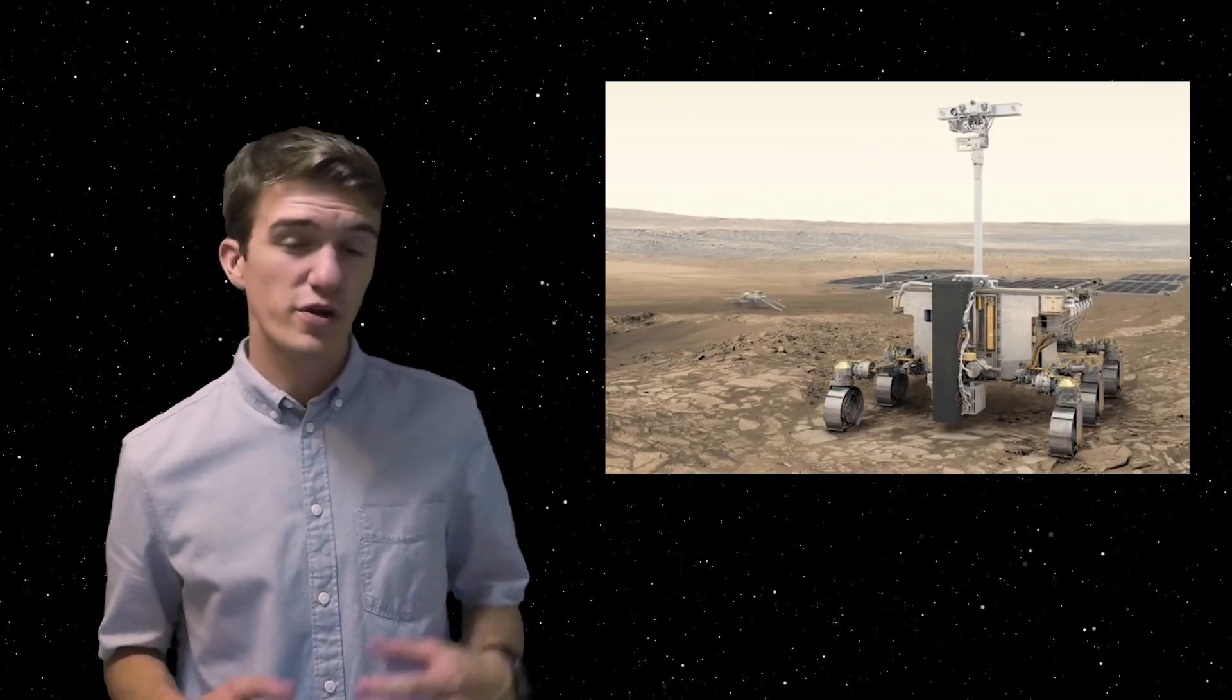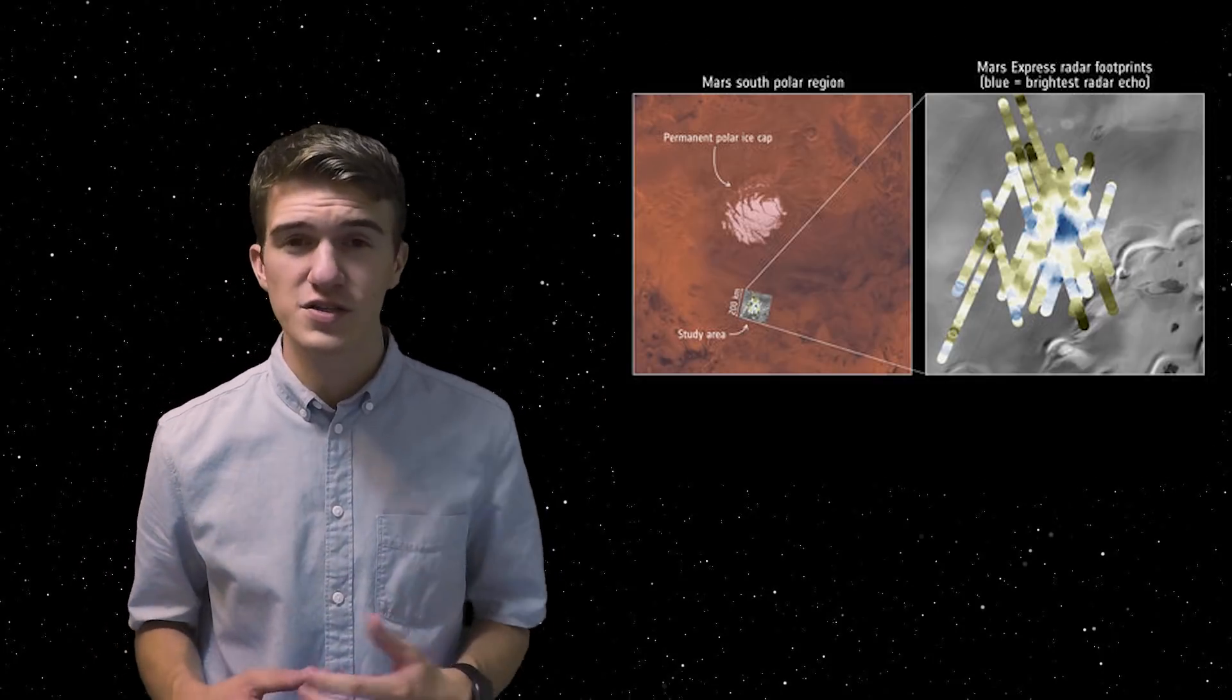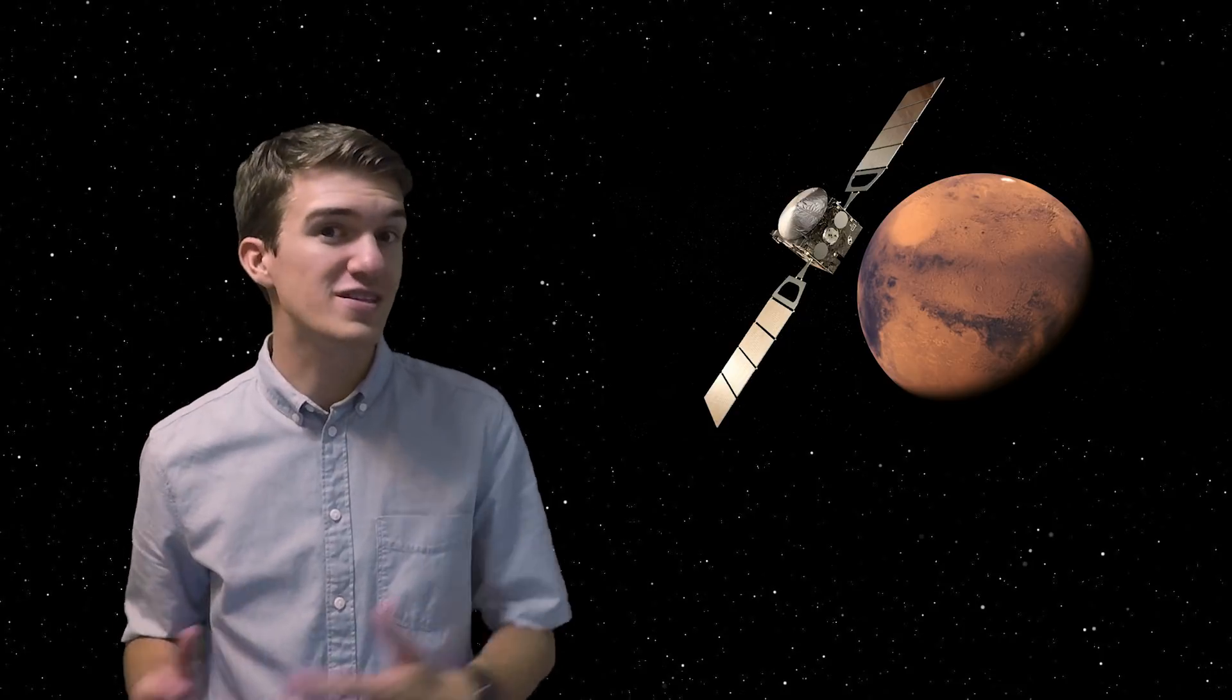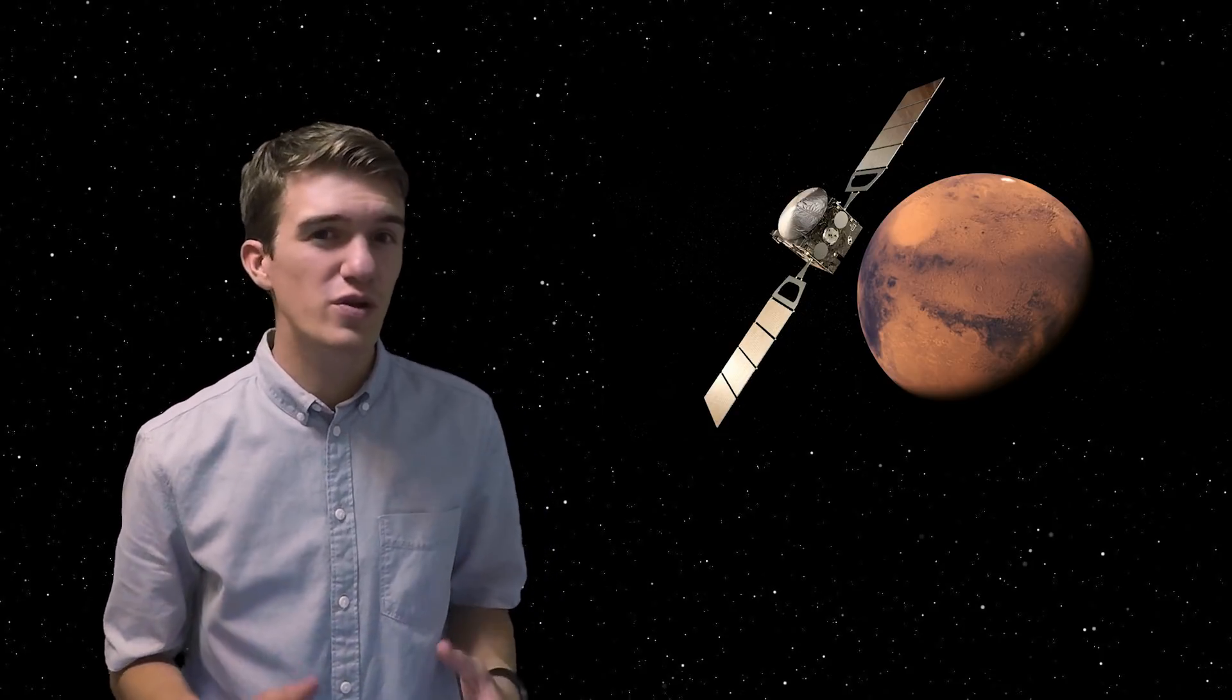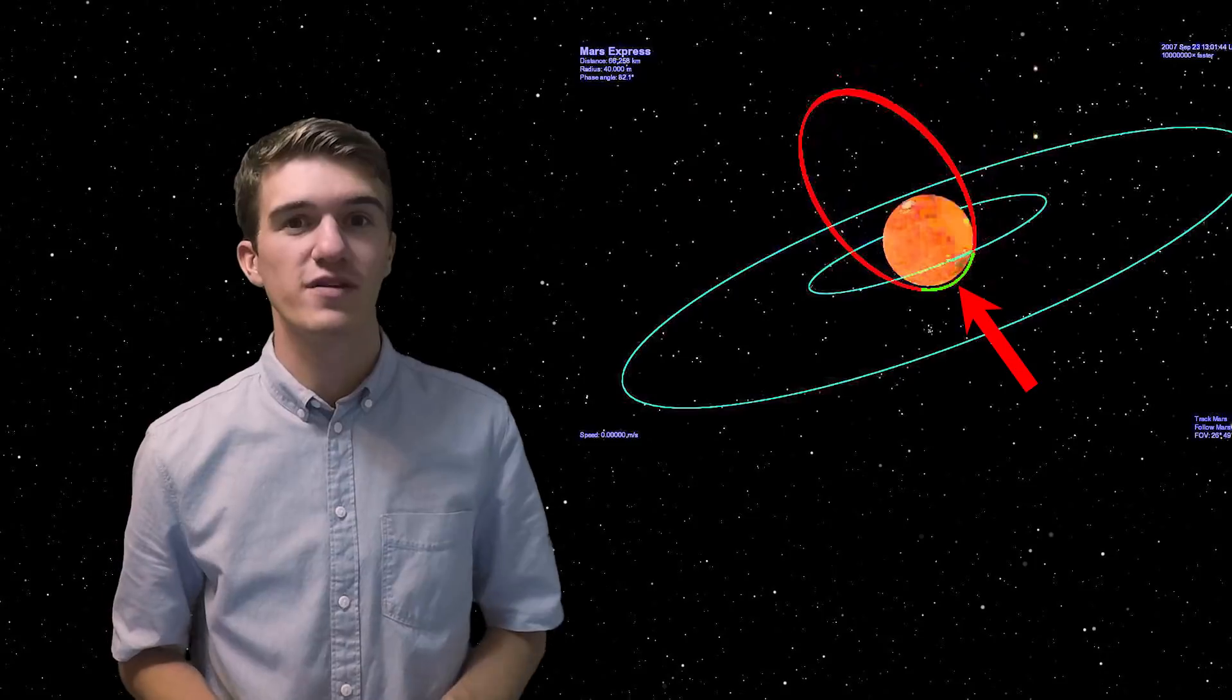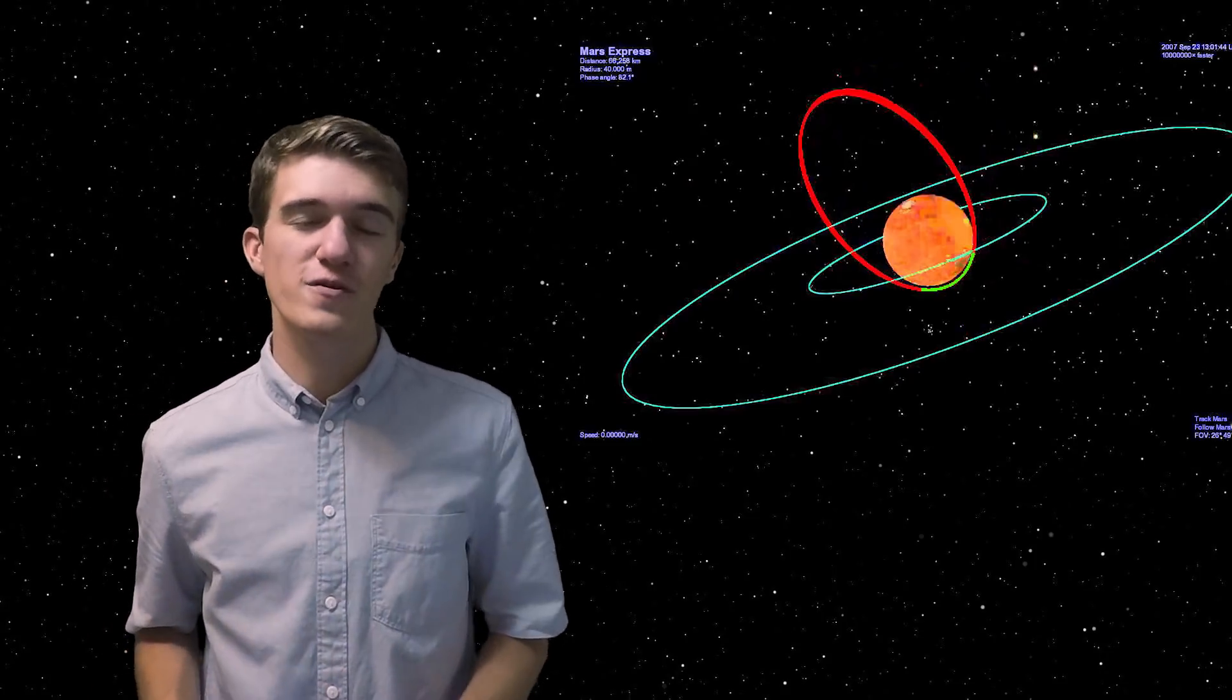So what does this mean for future missions to Mars? Scientists say once you find one, it becomes a lot easier to find more, but it might not be like that in this situation. As I mentioned before, the Mars Express satellite that the MARSIS experiment is onboard is 15 years old, and the instrument or the actual experimentation only works in a small percentage of the actual orbit of the spacecraft. Therefore, it would take a lot of effort to maneuver to a new location in order to see whether or not there are lakes elsewhere.